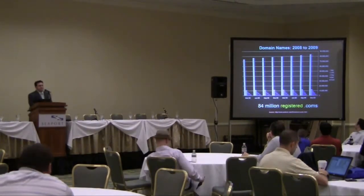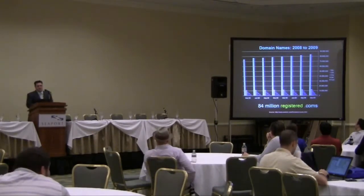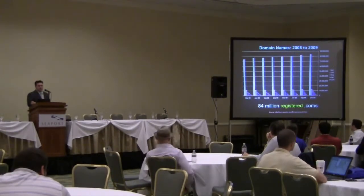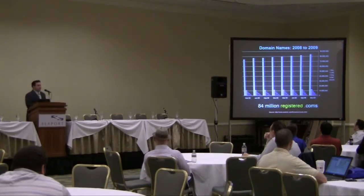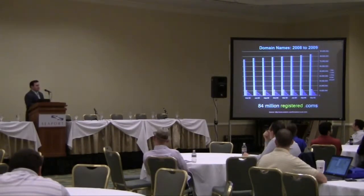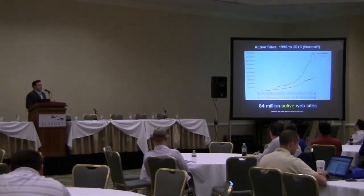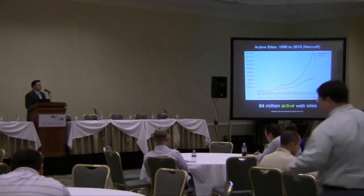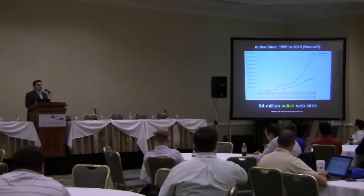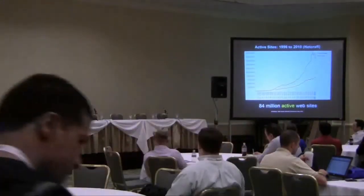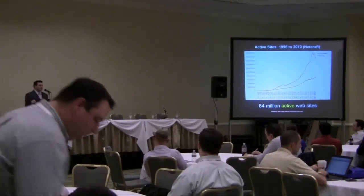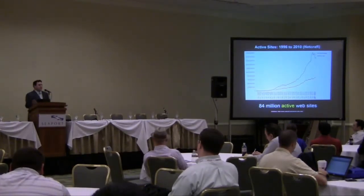Looking at domain name registrations from 2008 to 2009 gives you an idea of the scope of the current internet. In December 2009, there were 84 million registered .coms, about 12 million .nets, and everything else well below that — those GTLD guys selling .nike and .whatever are trying to cash in on the fact that no one cares about anything but .coms. The important number is the 84 million. The Netcraft survey for 2010 says there are around 240 million websites total, but only 84 million are considered active — sites where the content isn't just a duplicated parking page. So there are really about 84 million unique websites and domains out there.